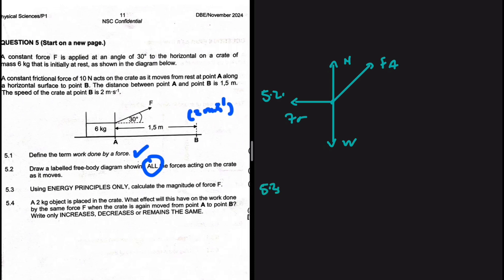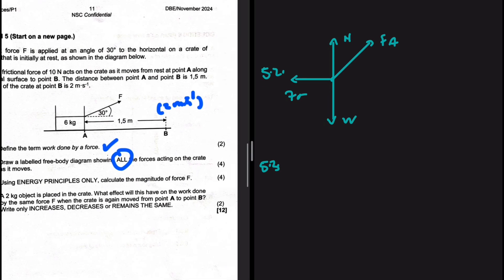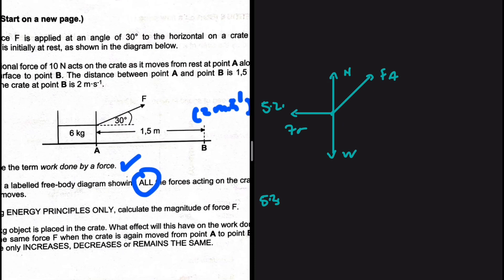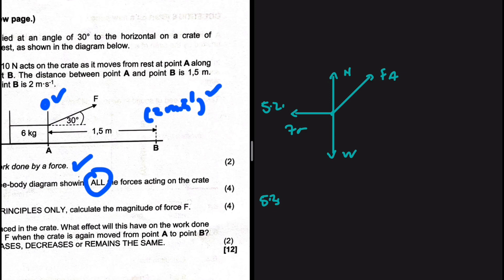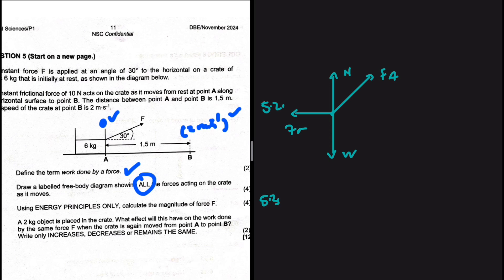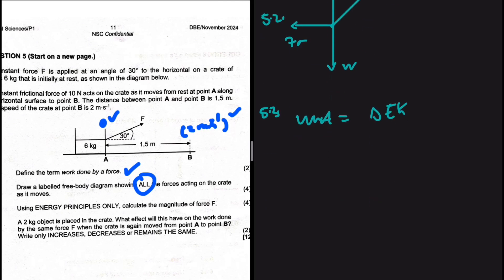Let's take a look at 5.3. Using only energy principles, calculate the magnitude of force F, that is for 4 marks. We have a free body diagram. We have the velocity at A, which is 0, and then we have a velocity at B, which is 2 meters per second. So because you are given the velocity at A and the velocity at B, it seems like we should be able to use the work energy theorem, which says that work net is equals to the change in the object's kinetic energy. But work net can work, and work non-conservative should also work. But if we use work net, work net is equals to the change in the object's kinetic energy.